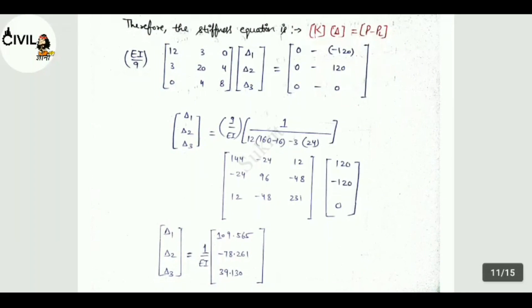Now the stiffness equation will be: K delta equals P minus PF. Here P was 0, 0, 0 and PF was minus 120, 120 and 0. So in the stiffness equation, we put values of K, delta and P minus PF. Solving the equation, the values of delta 1, delta 2, delta 3 equals 1/EI times the matrix: 109.565, minus 78.261 and 39.130.